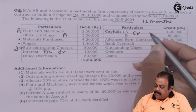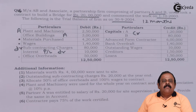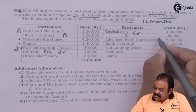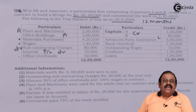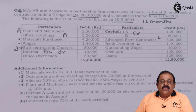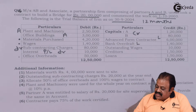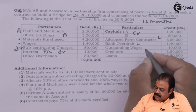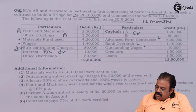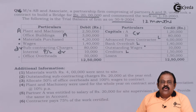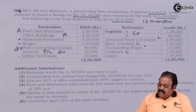Capital of A and B — we are required to open capital accounts, crediting the opening balances of partners' capital. Advance from contractee will be recorded on the liability side. Bank overdraft is a liability. Outstanding wages of 10,000 are to be considered for the contract. Creditors are a liability, and loans are also a liability.